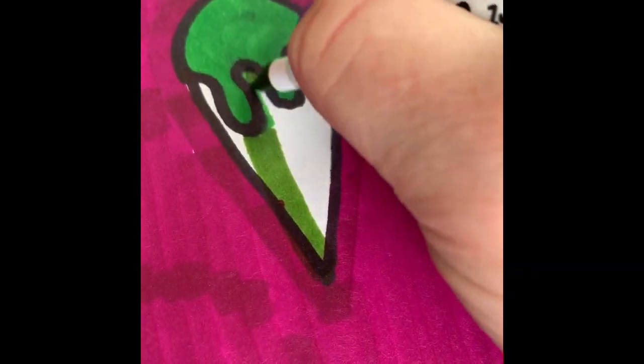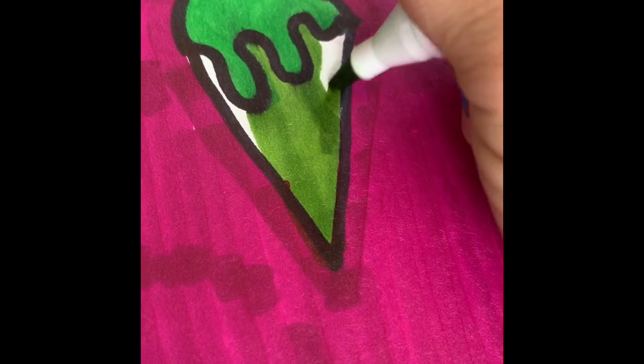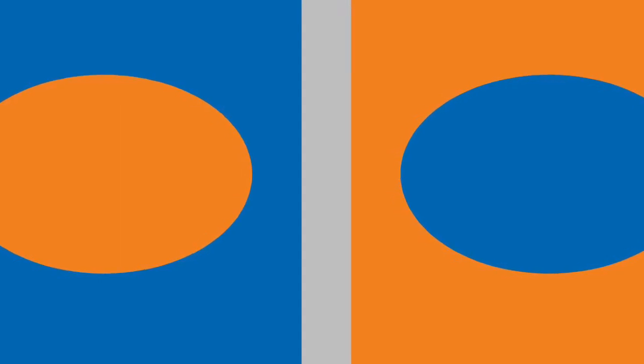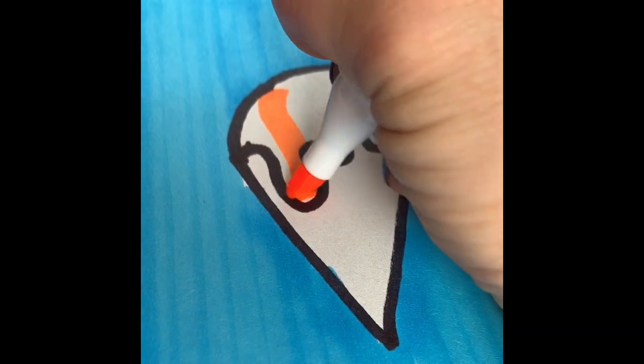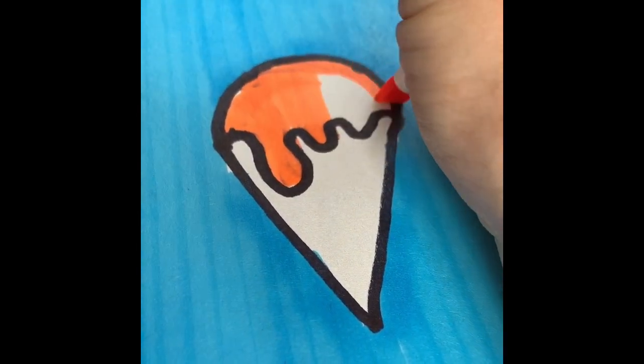The complement to pink is a light green. I'm making a sour green apple flavor ice cream. The complement of blue is orange. I'm making a tangerine orange flavor ice cream.